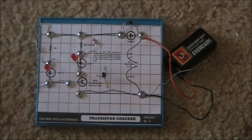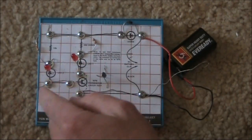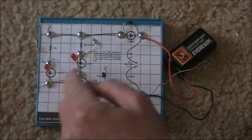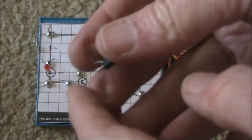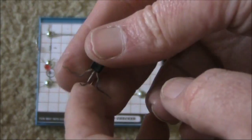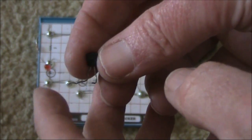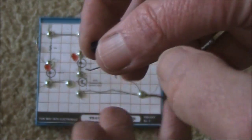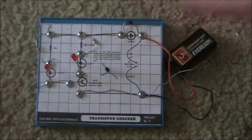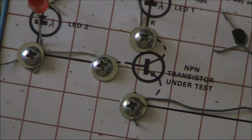This is the completed transistor checker. I've taken it inside, because it's better to use it when there isn't too much sunlight. You'll see the reason in a moment. This is the transistor under test. It's just an NPN small signal type. That's collector, that's base, that's emitter. We need to match those connections with what's shown on the board.